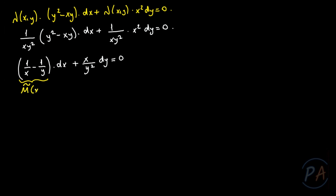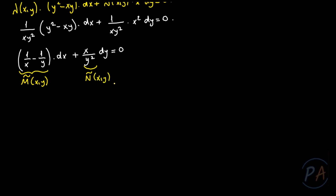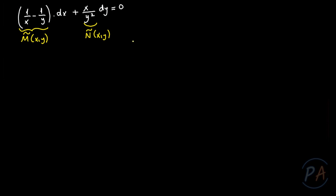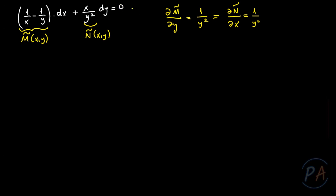Let me call the coefficient of dx as M-tilde of xy and the coefficient of dy as N-tilde of xy, and check the exactness condition. The partial derivative of M-tilde with respect to y equals 1/y², and the partial derivative of N-tilde with respect to x is also 1/y². They are equal to each other, so this equation is now an exact differential equation.